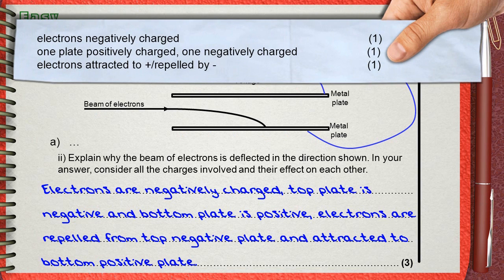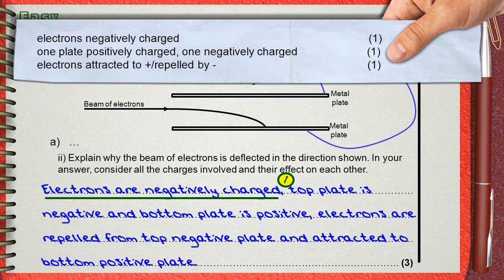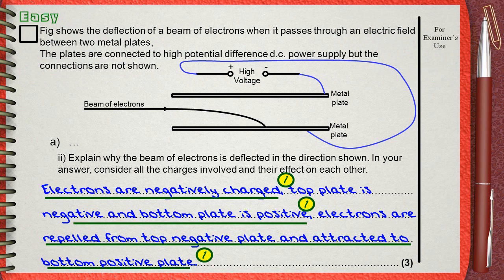There are three marks for the answer. The first mark is for mentioning that electrons are negatively charged. The second mark is for stating that one plate is positively charged and one is negatively charged — specifically the top plate is negative and the bottom plate is positive. The third mark is for mentioning that electrons are attracted to the positive plate and repelled by the negative plate.